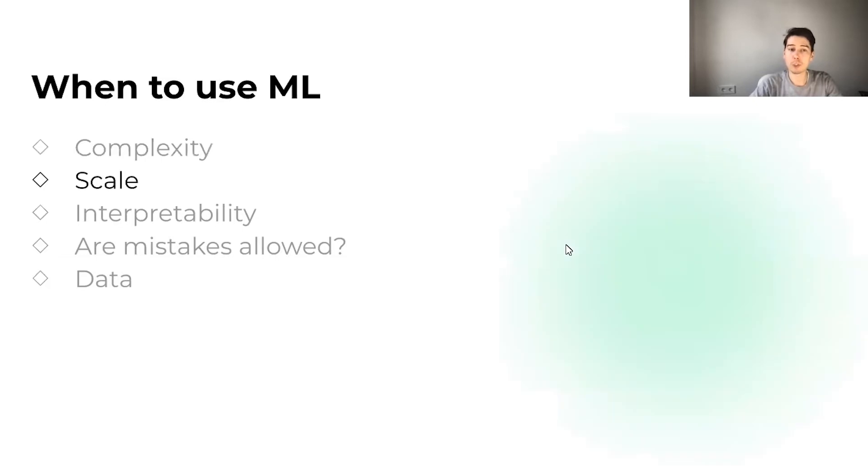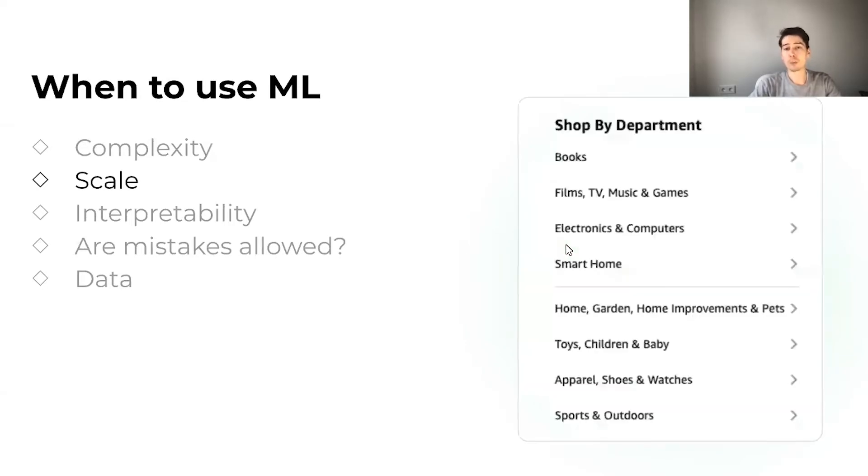The next question is scale. And again, if the problem you are trying to solve is of small scale, I wouldn't really recommend you to use machine learning. For example, if our e-commerce platform has launched recently and we want to assign a category for each product, it would be much easier to hire just a few content managers who would do this manually instead of trying to automate this process with machine learning.